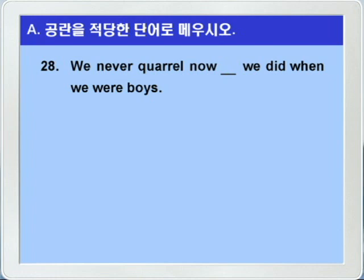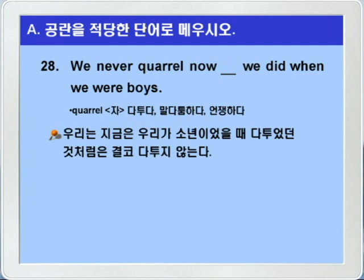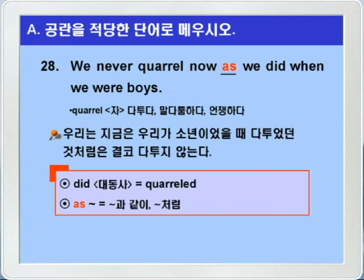28번입니다. we never quarrel now. quarrel이 다투다, 말다툼한다, 이런 뜻이니까, 우리는 지금은 결코 다투지 않는다. blank we did when we were boys. 여기 did는 quarreled를 받는 대동사입니다. 우리가 소년이었을 때 다투었던 것처럼. 따라서 blank에는 뭐뭐처럼 이런 의미를 갖는 접속사 as를 쓰면 되겠습니다. We never quarrel now as we did when we were boys.